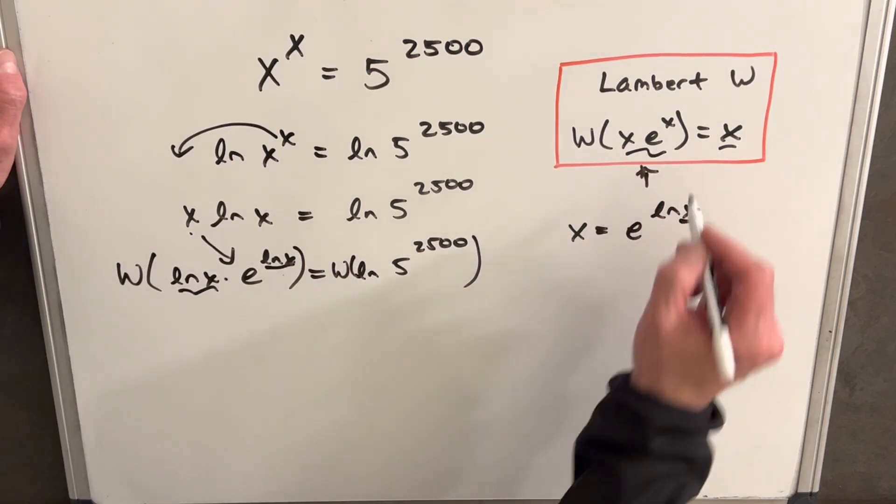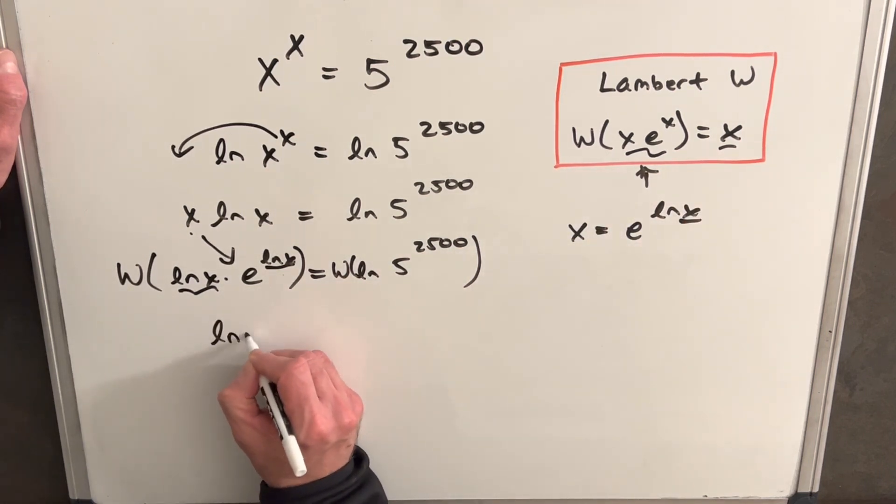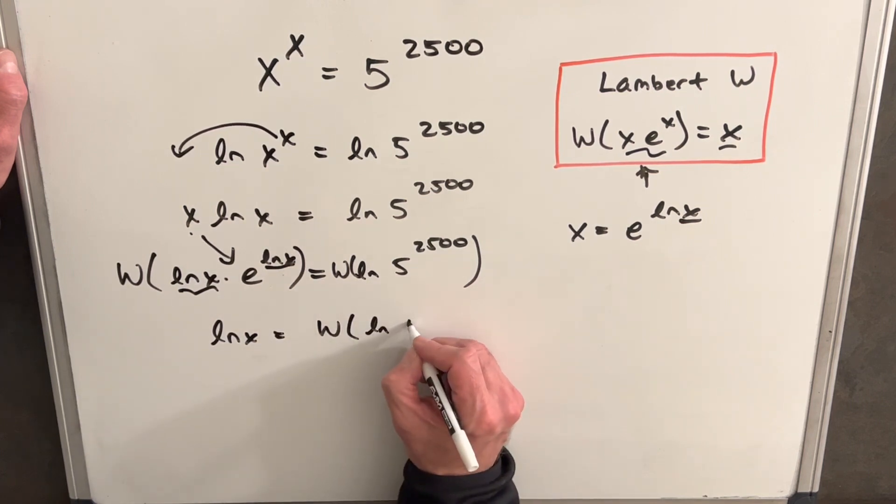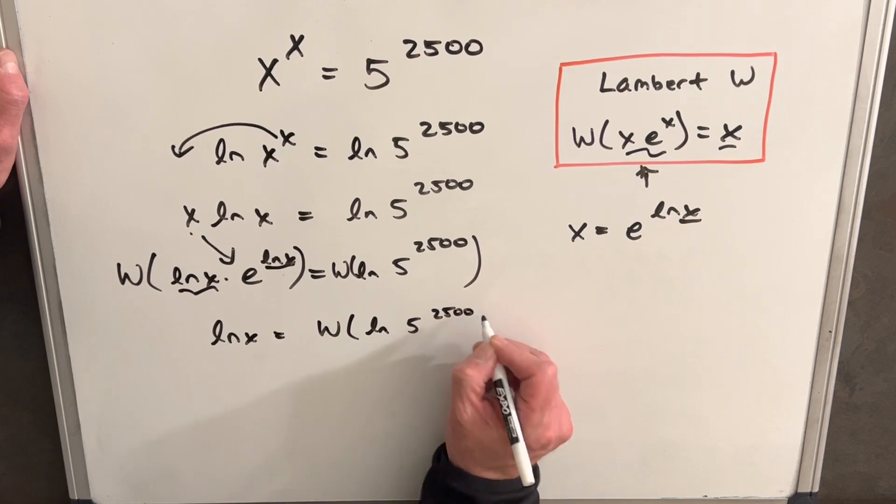And then so using this, we're going to get back ln x equals Lambert W of ln 5 to the 2,500.